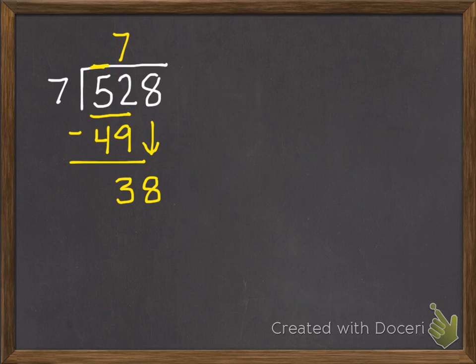I have 3 10s left. Bring down my 1s. Now 38 1s. So how many 7s are in 38? There are 5. So 5 times 7 is 35. 38 subtract 35 is 3. We've used all of our digits. So we're done. 75, remainder 3.